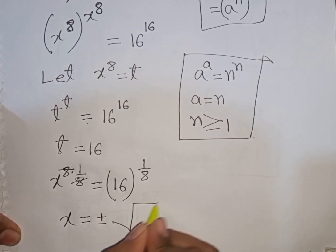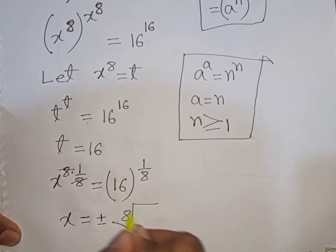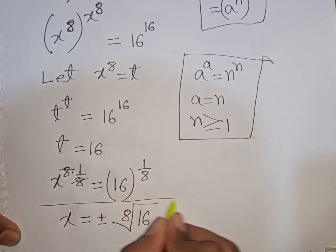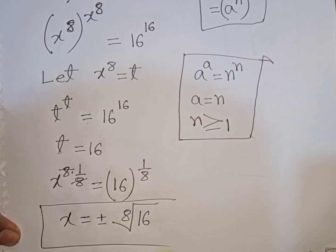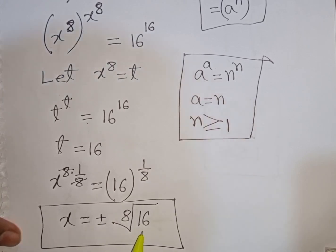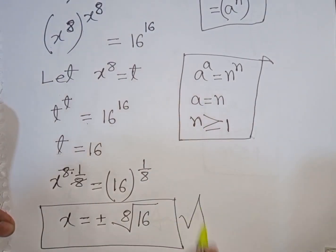16 power of 1 by 8 can be written as the 8th root of 16. So x equals plus or minus the 8th root of 16. This is the value of x and our final answer.